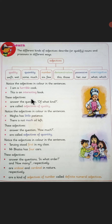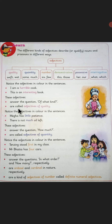Now students, these adjectives answer the question 'what kind.' What kind of cook was he? They are answering questions of what kind. Hence, the words horrible and interesting are adjectives of quality. That is why they are called adjectives of quality. Now notice the adjectives in colour in the sentences which are given below.